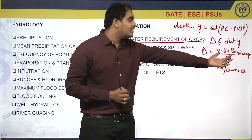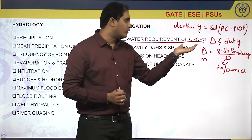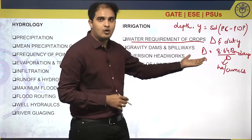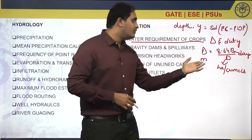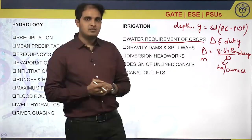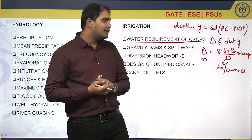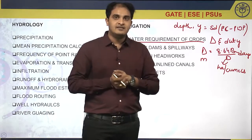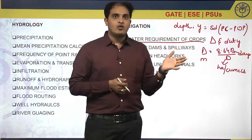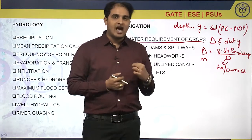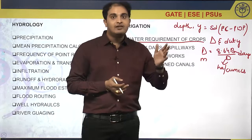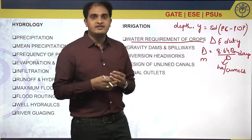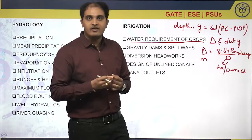This is a very important formula especially for GATE and ESC competitive examinations, and we need to be careful with unit substitution. In this topic we also need to focus on efficiencies. When a canal supplies water to the field, there are losses in between which we call conveyance losses, and the corresponding efficiency is conveyance efficiency.